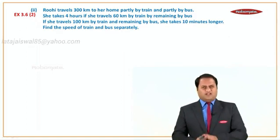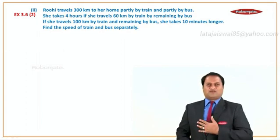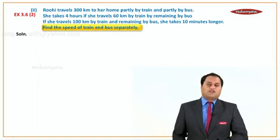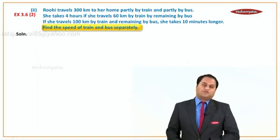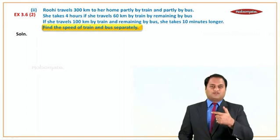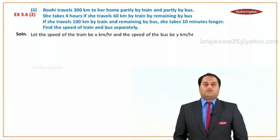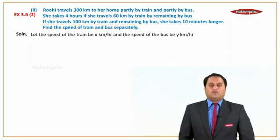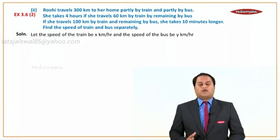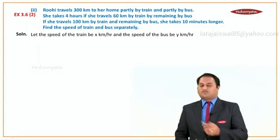Don't worry, let's go step by step. First ask yourself: what are you supposed to find? You are supposed to find the speed of the train and the speed of the bus — two unknowns. Let one be X and the other be Y. So, let the speed of the train be X kilometers per hour and the speed of the bus be Y kilometers per hour.